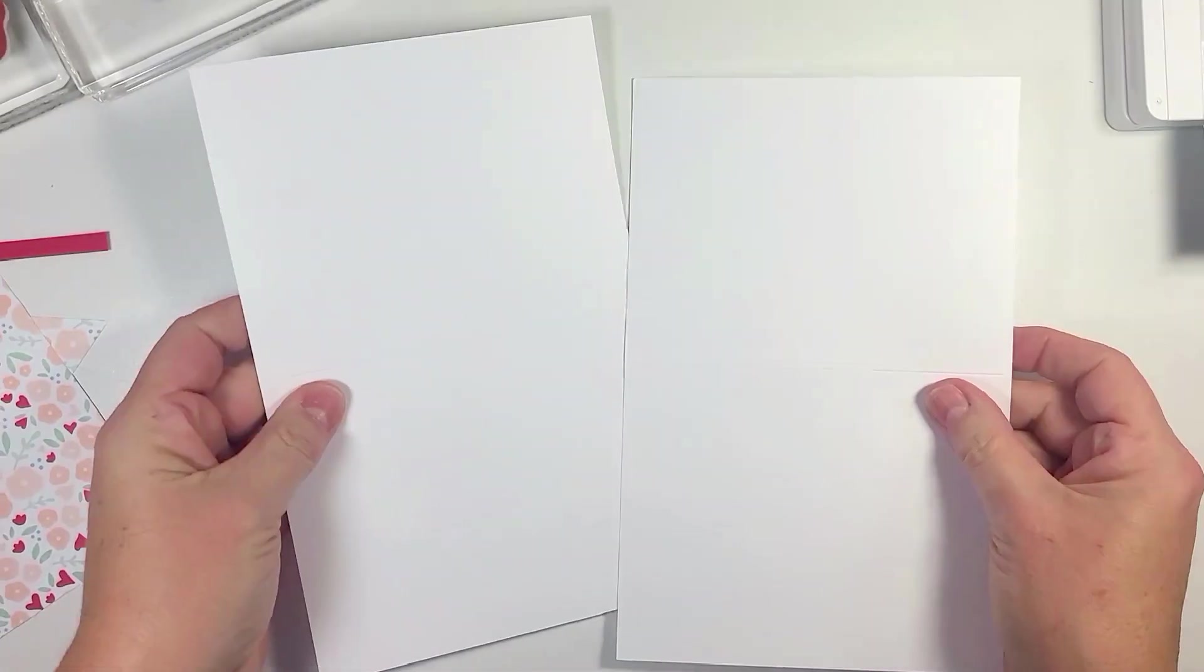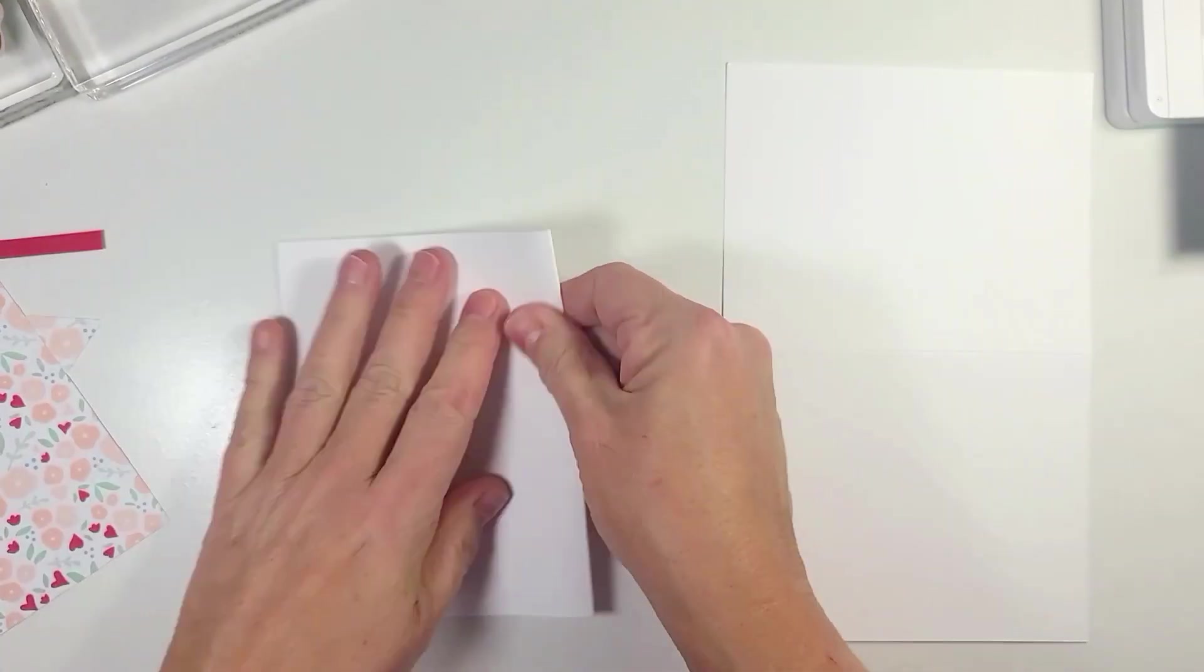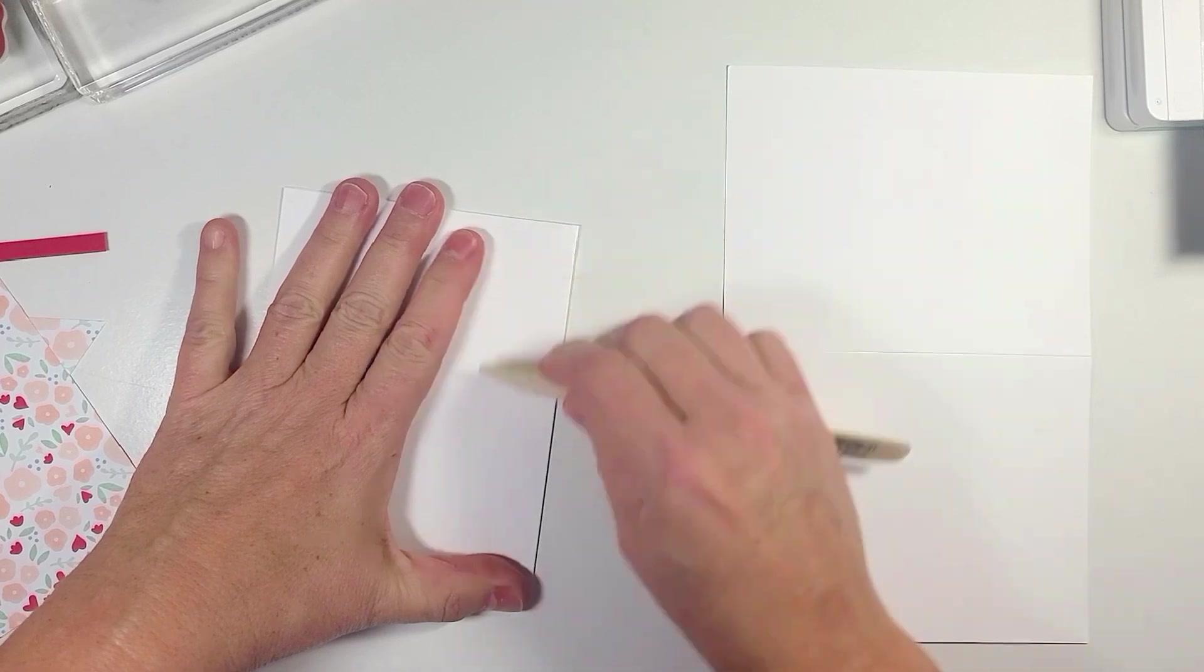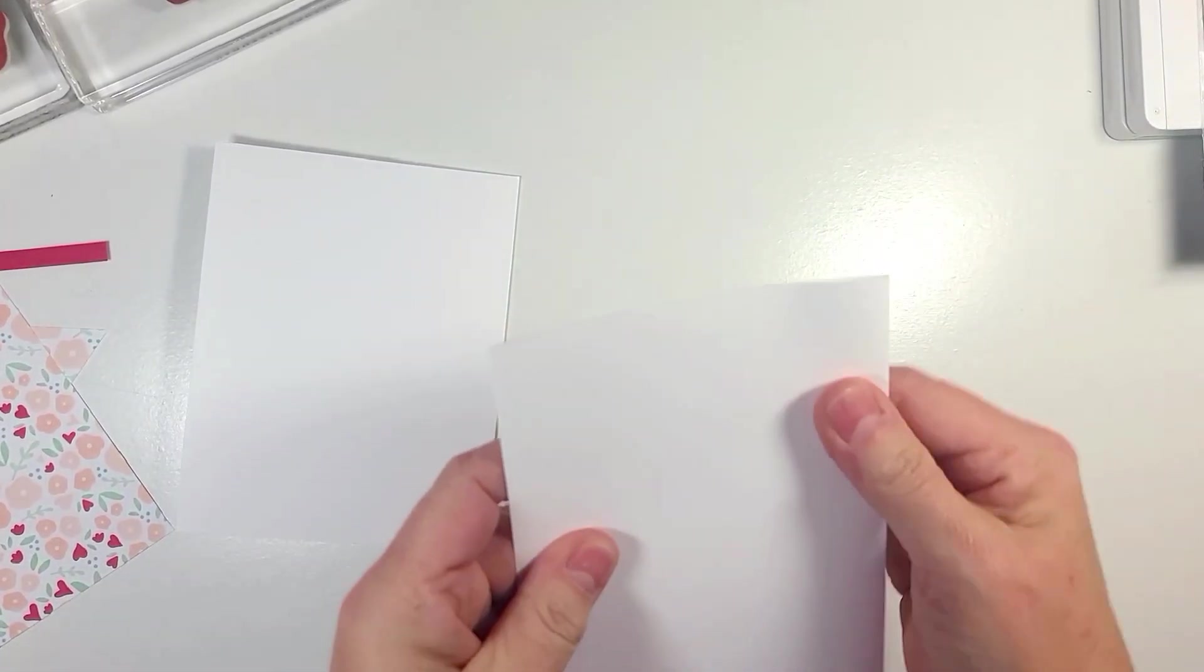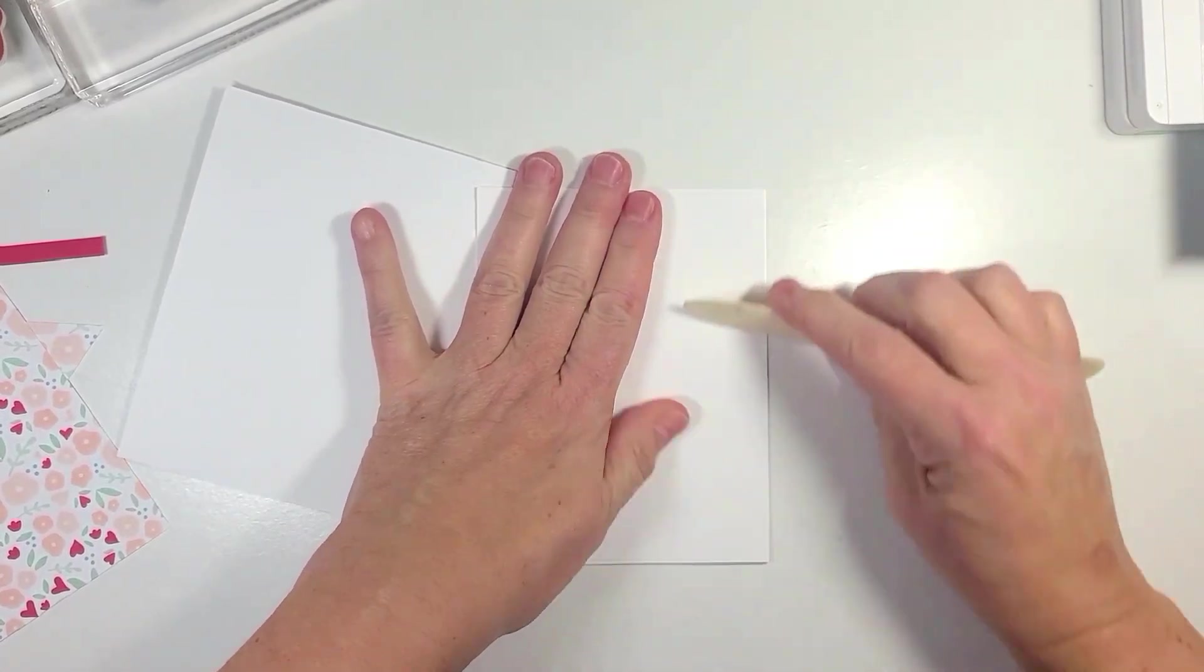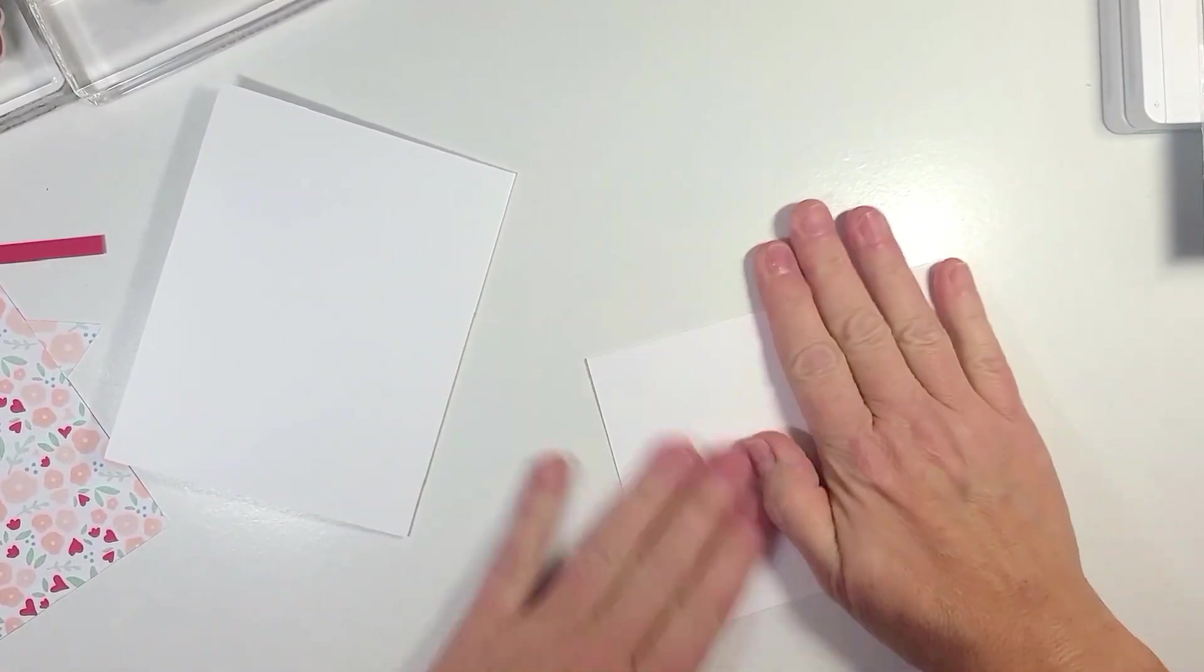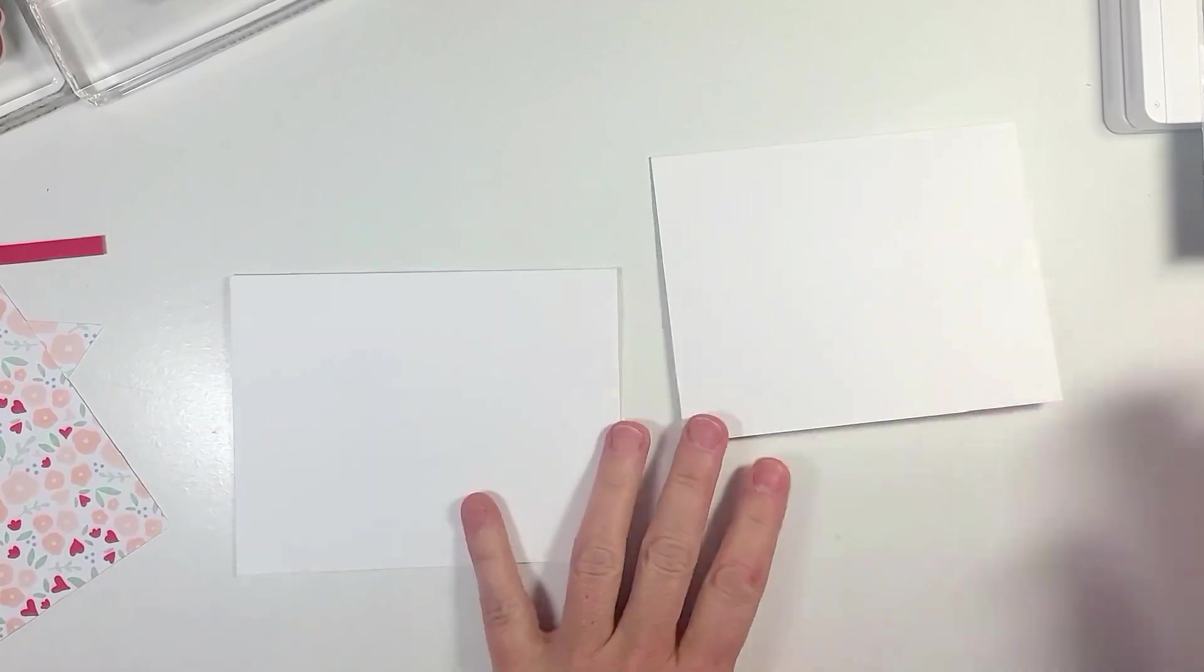We're going to take our card bases here and we're going to fold them in half. We're going to give them each a good burnish with our bone folder. Just gives it a good crisp edge.